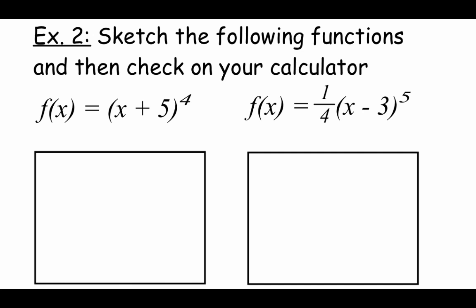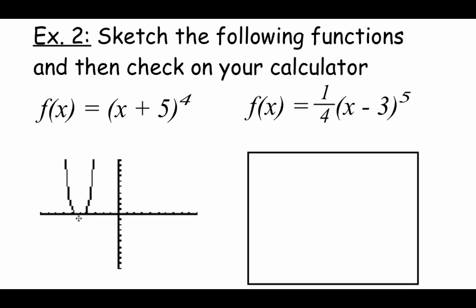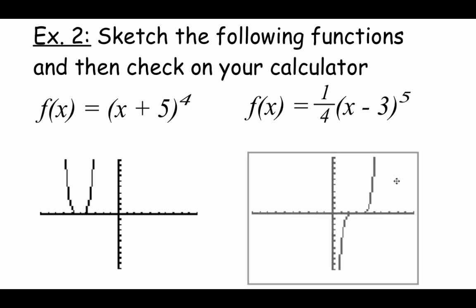Using what we know about powers and transformations, we can do quick sketches of these functions. For f(x) = (x+5)⁴, I see a fourth power so it should look like a parabola, and the plus 5 inside means a horizontal shift left 5 units — a parabolic graph, a little flatter on the bottom, shifted left 5. For the next function with a fifth power, it will look like a cubic graph but flatter around the origin. The minus 3 inside shifts us right 3 spaces, and the one-fourth coefficient vertically shrinks the graph, making it shorter and wider.